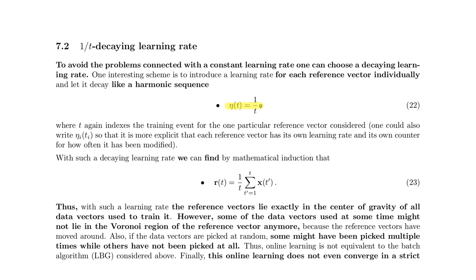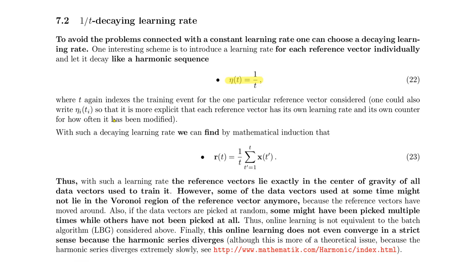With a 1/t learning rate, using a similar mathematical induction, we can show that the reference vectors are positioned at the average of all data points assigned to them — simply the center of gravity. So the reference vector lies exactly at the center of gravity of all data vectors used to train it.